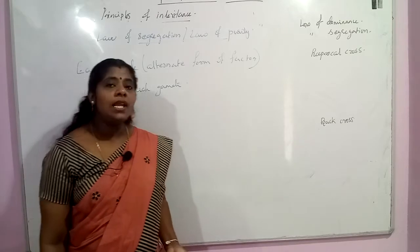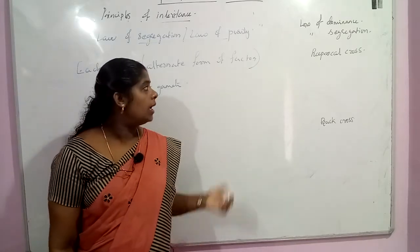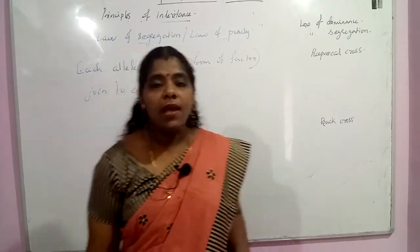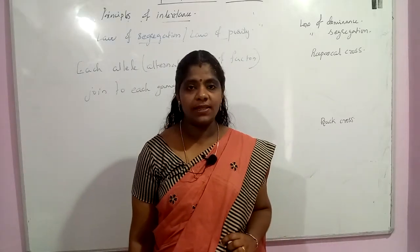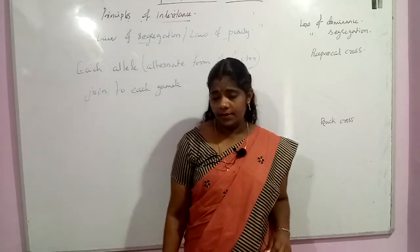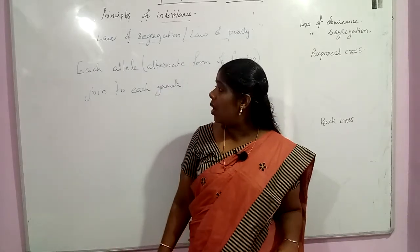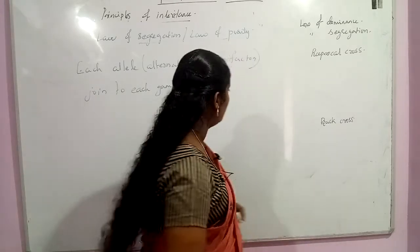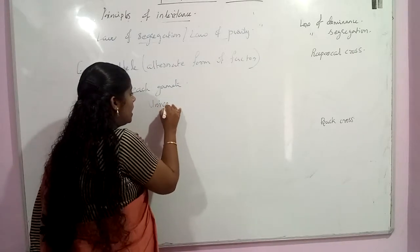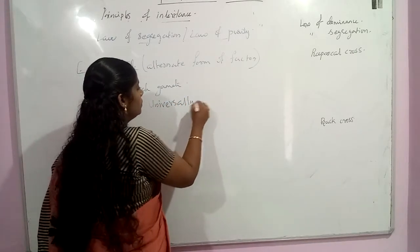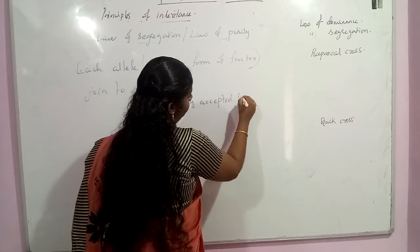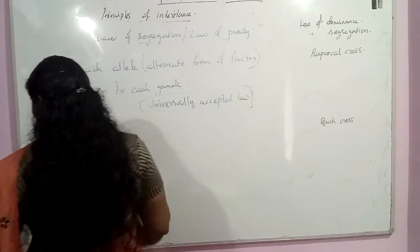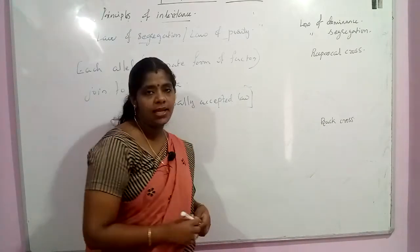The 3:1 ratio confirms these two laws which Mendel hypothesized. The law of dominance was disproved by some experimental results, but the law of segregation is the universally accepted law of Mendel.